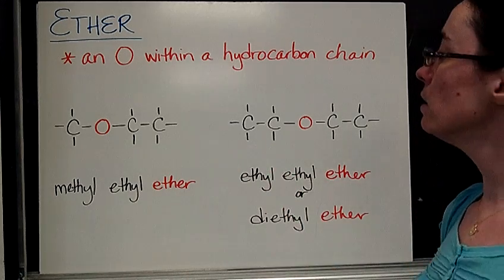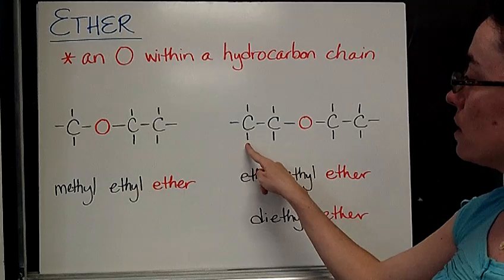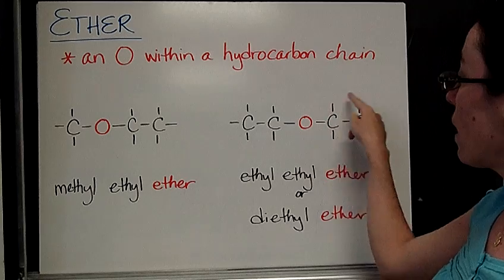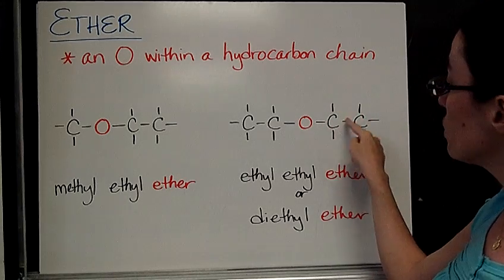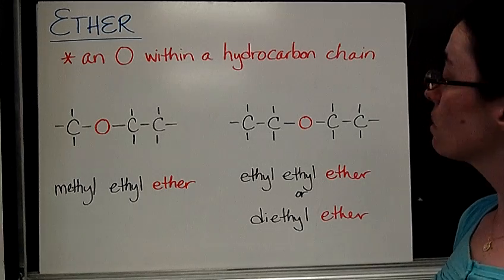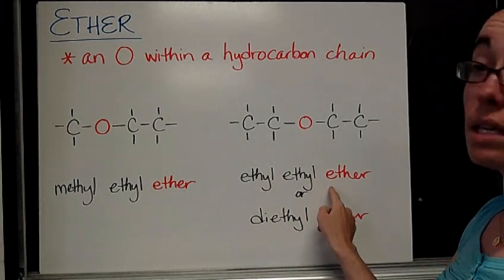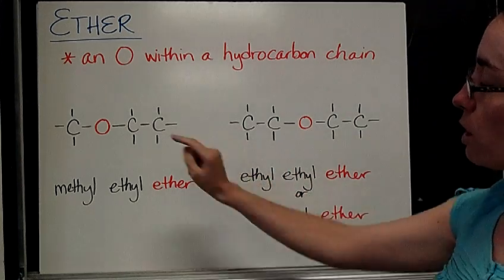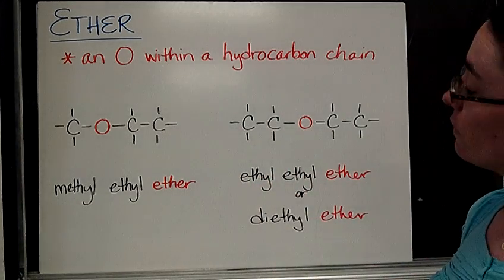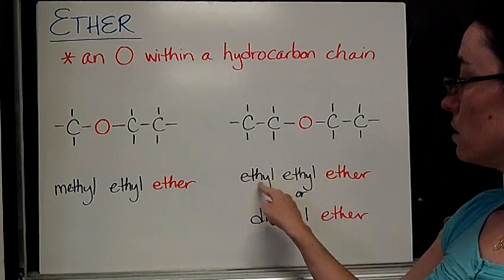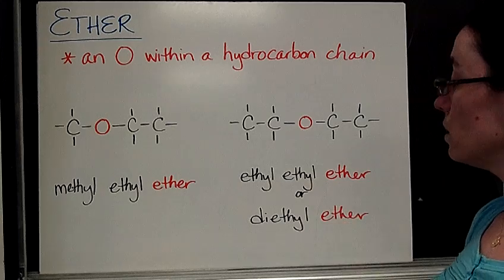Now over here I have another example. On this side we have a two carbon branch, so we call that ethyl. On the other side, it's sort of symmetrical, I have another two carbon branch known as ethyl. So there are a couple ways you could name this. You can call it ethyl ethyl ether, if you like to be very specific and methodical, much like we did that one. Or if you'd like to write a little bit less, it is also referred to as diethyl because there are two of them. So diethyl ether.